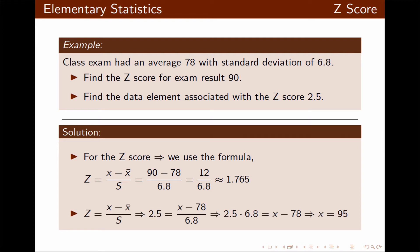Now, to find the data element with the z-score 2.5 is the same process. This time, z is 2.5 and x is unknown. The data element, the exam score, is unknown. We use 78 for x-bar and 6.8 for s. Cross multiply, solve the linear equation, and x is 95.